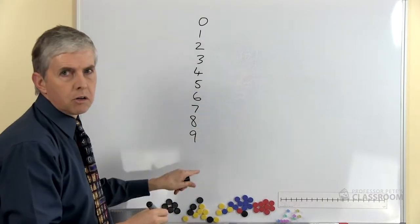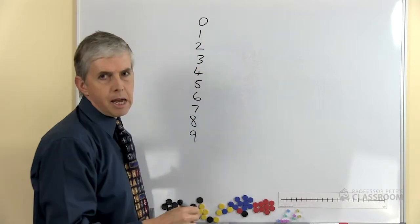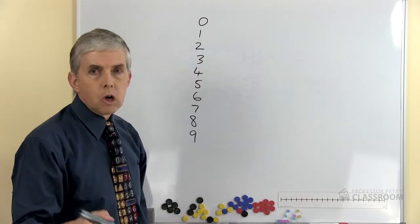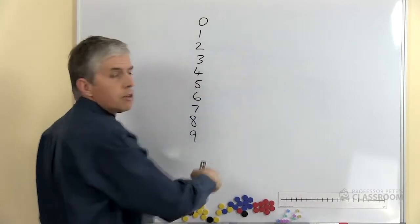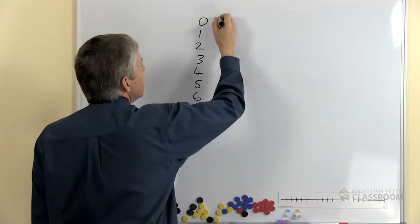From zero to nine in a vertical column. Next to that I'm going to write, and you can copy this yourself, we're going to write the numbers in the reverse order starting with nine.